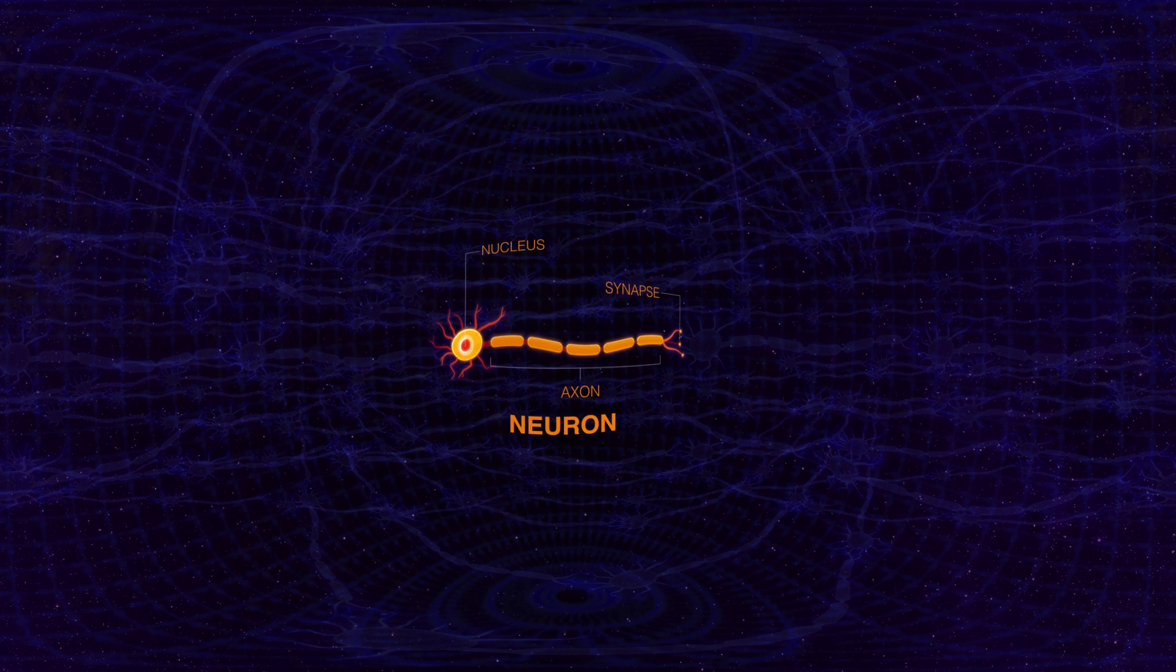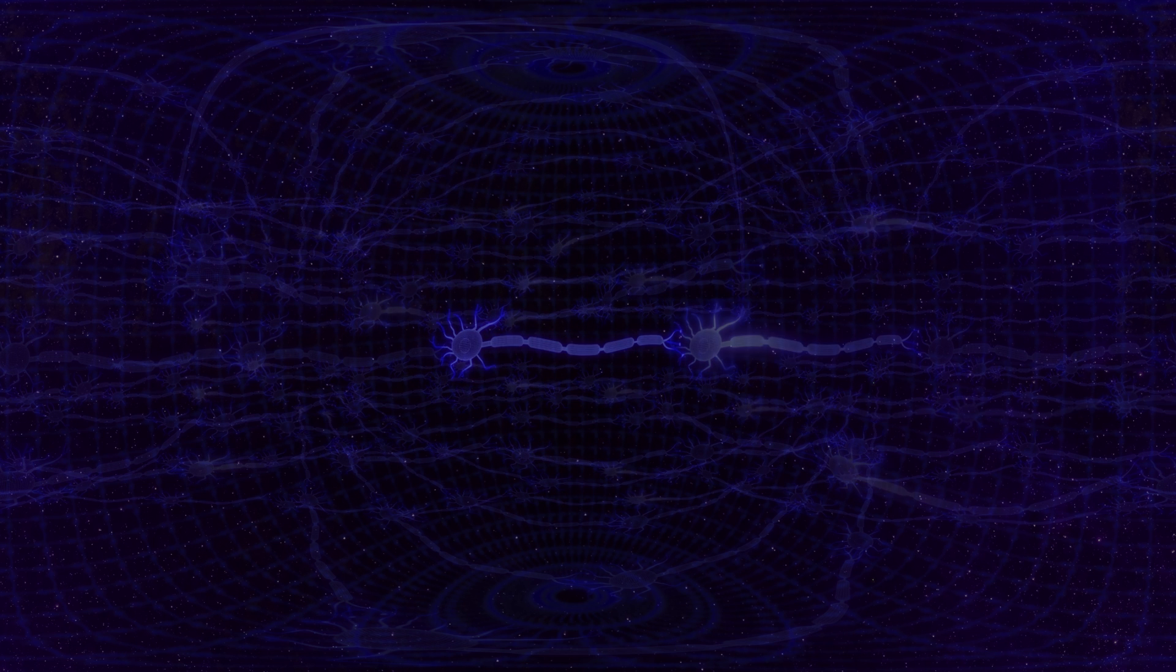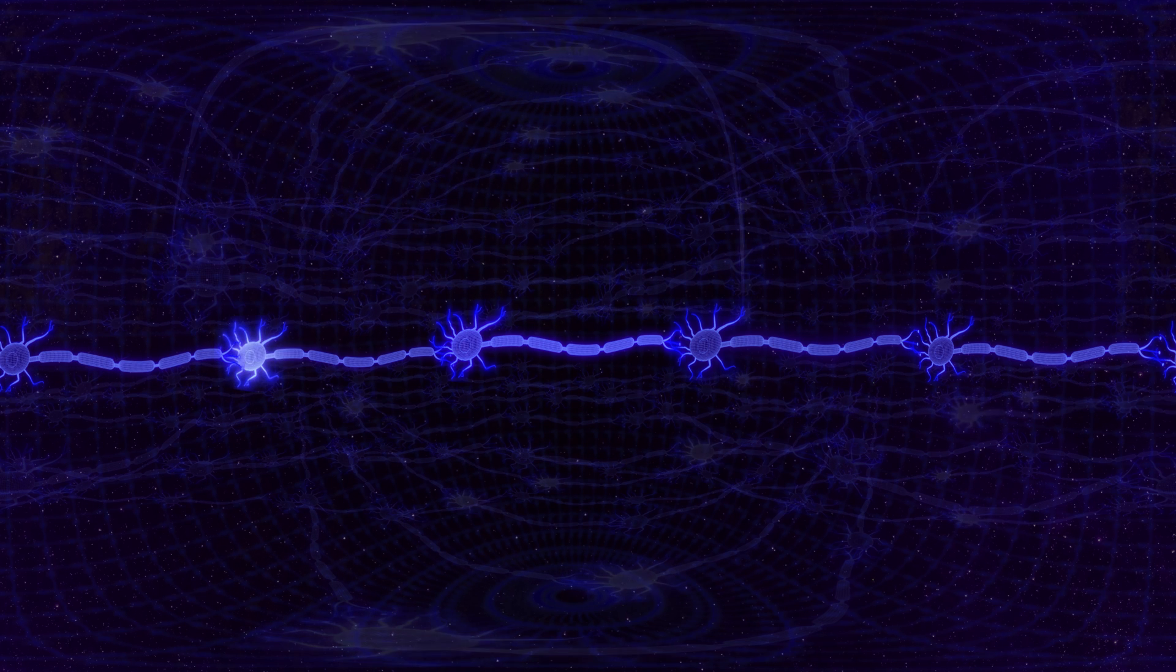This is a single brain cell called a neuron. Neurons communicate by sending electric and chemical signals to find one another. One neuron sends a signal to another who listens and passes it on to the next.